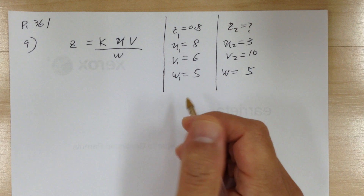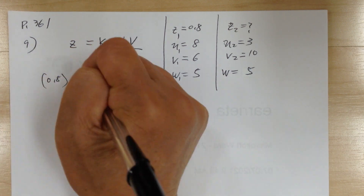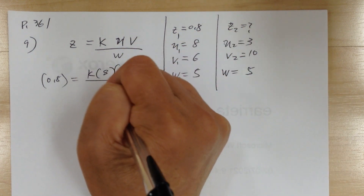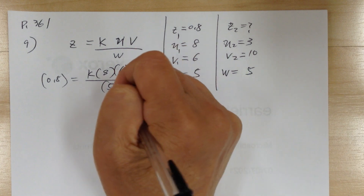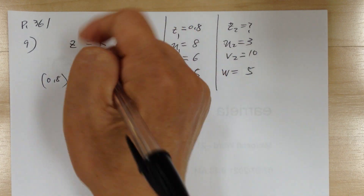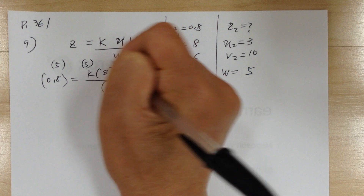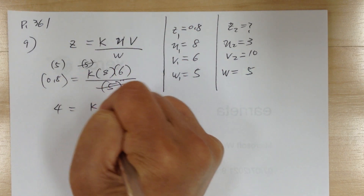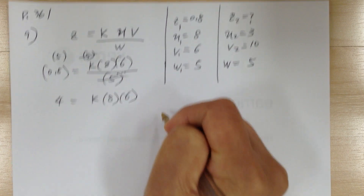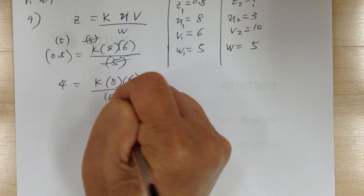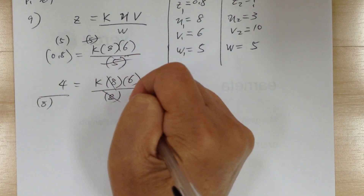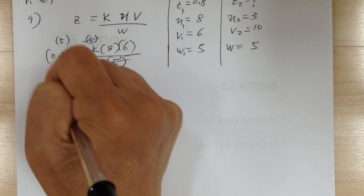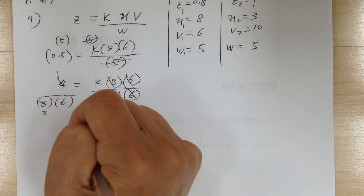First, get rid of the fraction — multiply by 5. So 4 equals k times 8 times 6. Then divide both sides by 8 — this cancels out. Divide both sides by 6 — this cancels out. So k equals 1 over 12.